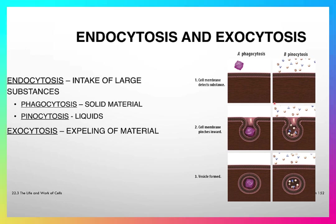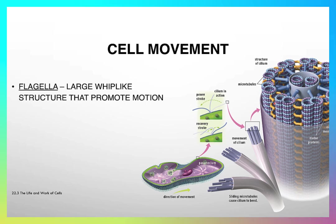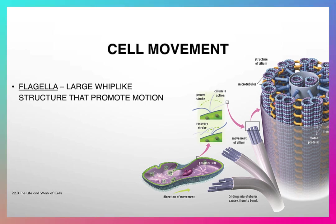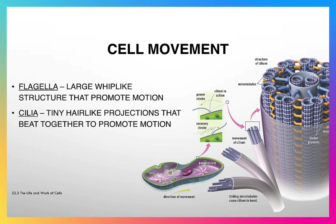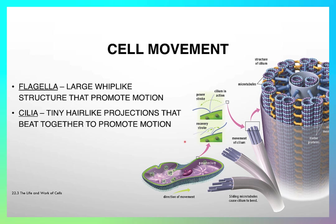Exocytosis is the reverse of endocytosis and it's the expelling of materials into the environment. Cellular movement is accomplished a few different ways. One way is the use of a large whip-like structure at the end of the cell called a flagella. The euglena, for example, has a large flagella which it uses to move around. The other structure is called cilia, pictured on this paramecium here — these little hair-like structures act somewhat like oars and stroke through the environment to move the organism.